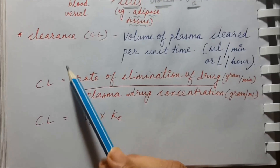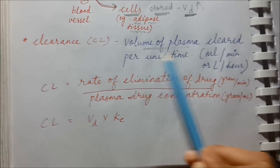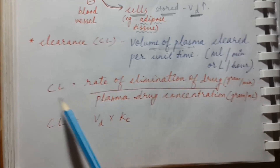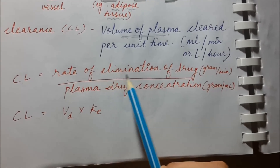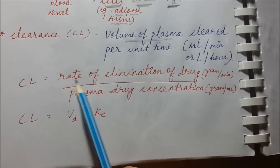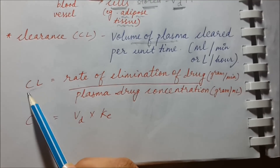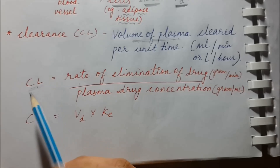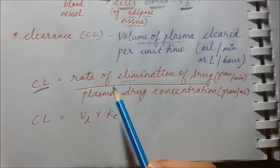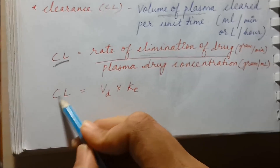Now let's move on to clearance. Clearance is the volume of plasma that is cleared per unit time — it is not the amount of drug, it is the volume of plasma. Clearance equals the rate of elimination of drug divided by plasma drug concentration. The rate of elimination is the amount of drug cleared per minute, while clearance is the volume of plasma cleared per minute.